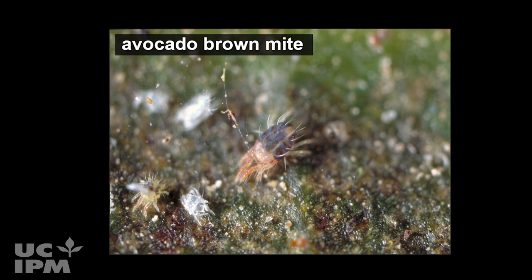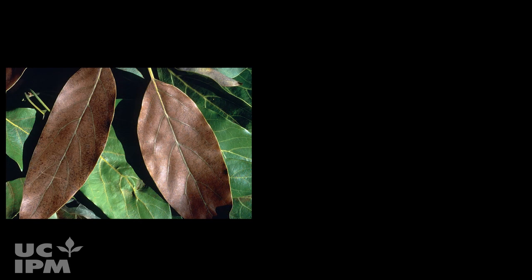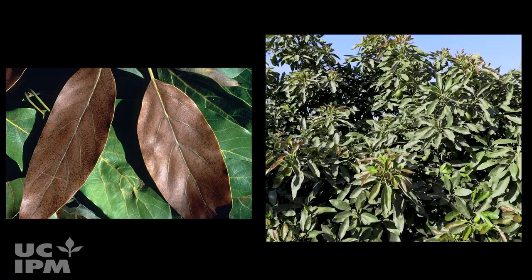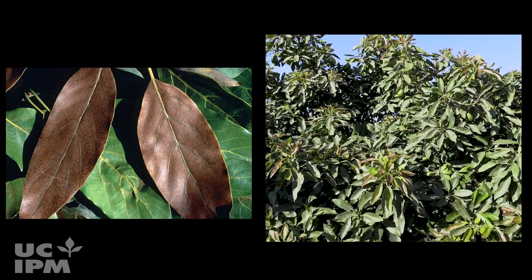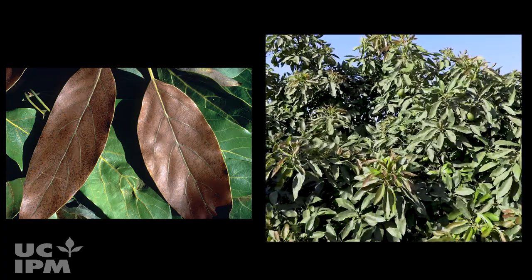Avocado brown mite feeds on the upper side of leaves, but may also be found on the bottom of the leaves in more severe situations. Their feeding causes the upper surface of the leaf to turn dark bronze, which is strikingly different from the bright green color of healthy leaves.